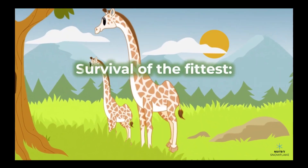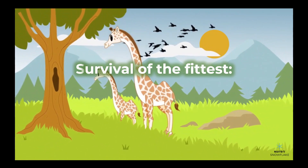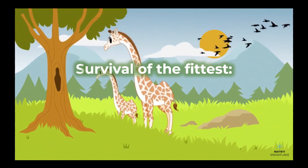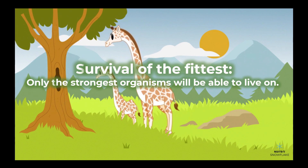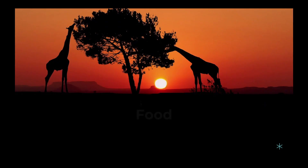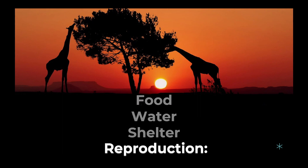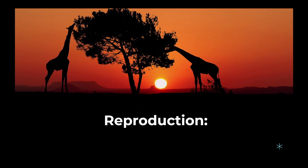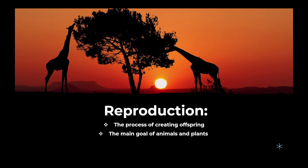Have you ever heard the term 'survival of the fittest'? In the animal and plant world, this means that only the strongest organisms will be able to live on. Most animals and plants, in addition to seeking food, water, and other resources needed for survival, are also looking to reproduce. Reproduction is the process of creating offspring, and it is the main goal of animals and plants.